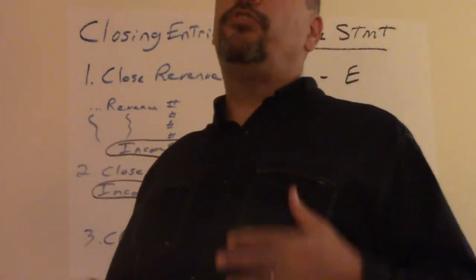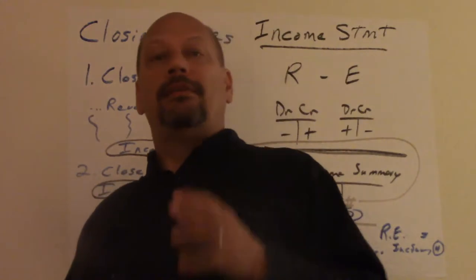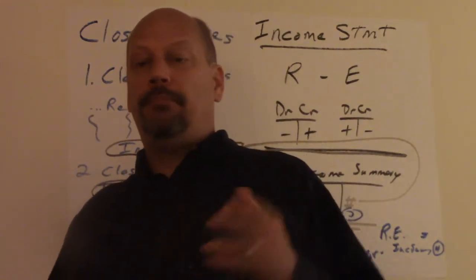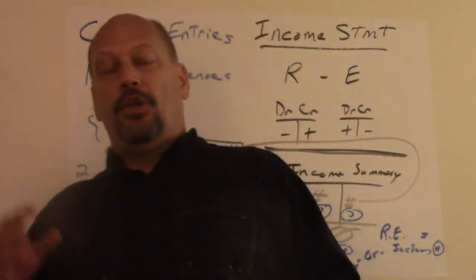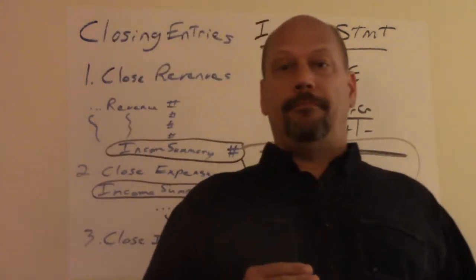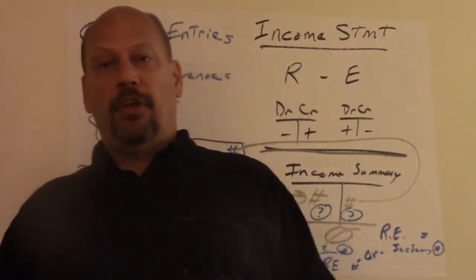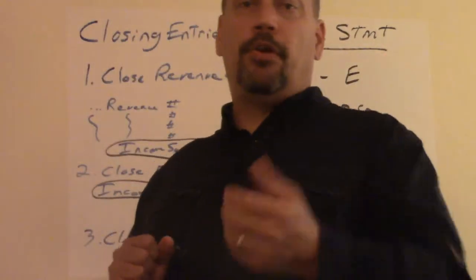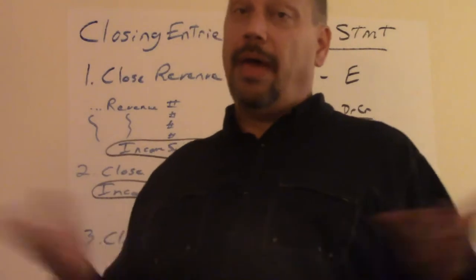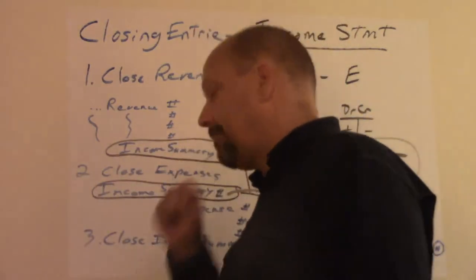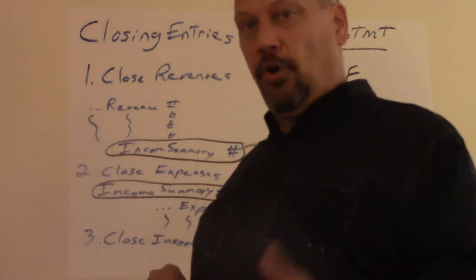You only close temporary accounts. Temporary accounts would actually be just purely the income statement. You need to close the income statement every year so that you can say this is the amount of money we made in the period or for the year. So you start from zero next year. To do that you have to close it. Balance sheet accounts are deemed permanent accounts.